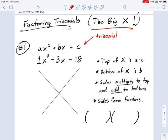And what we're going to do here for the big X is I've drawn the X, and we're going to fill in parts of the X with numbers from the polynomial. So as you can see here, the top of the X is a times c. So a times c is negative 18 times 1.